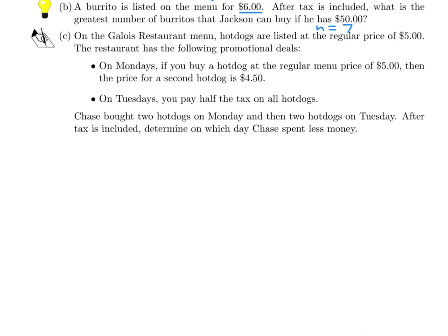On the Galloway's restaurant menu, hot dogs are listed at a regular price of $5. The promotional deals are: on Monday, if you buy a hot dog at regular price of $5, the second hot dog is for $4.50. On Tuesdays, you pay half the tax on all hot dogs. Chase bought two hot dogs on Monday and two on Tuesday. After tax, determine which day Chase spent less money.